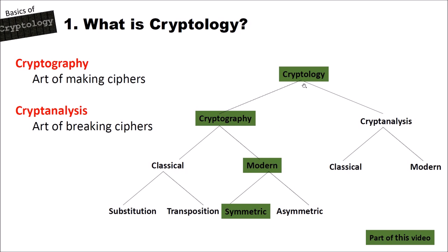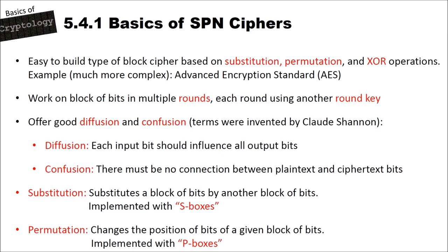SPN ciphers are easy-to-build block ciphers based on substitution (the S), permutation (the P), and XOR operations. An example of a substitution permutation network that is much more complex than the examples we'll look at in this video is the Advanced Encryption Standard, or AES.